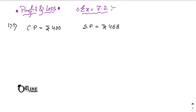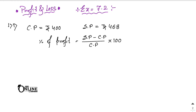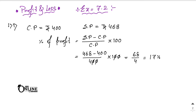For loss, cost price is greater than selling price. To find the percentage of profit, the formula is: SP minus CP, divided by CP, into 100. Putting in the values: 468 minus 400, divided by 400, into 100. The zeros cancel out, giving 68 by 4, which equals 17%. So the percentage of profit is 17%.